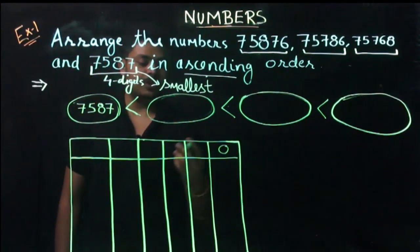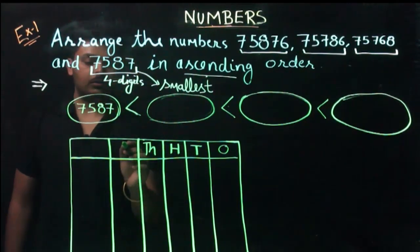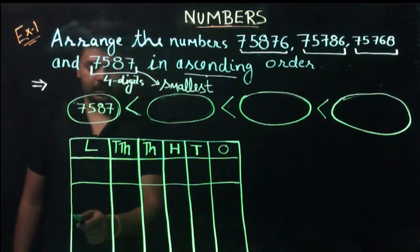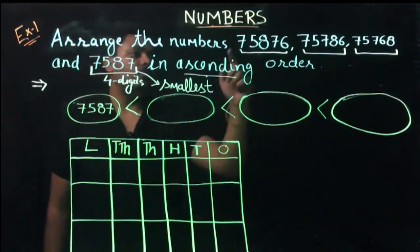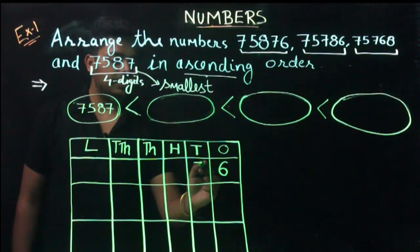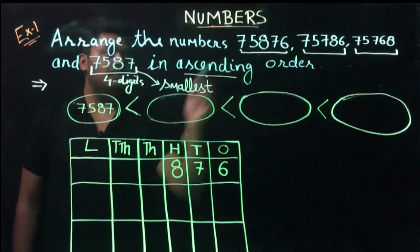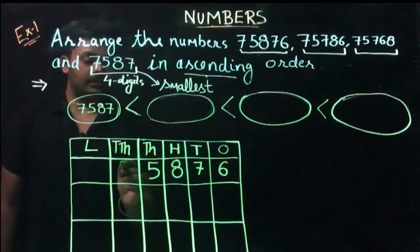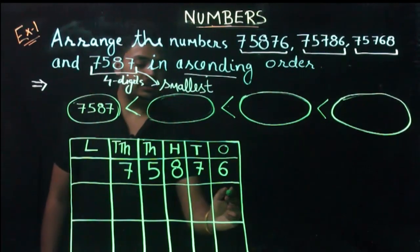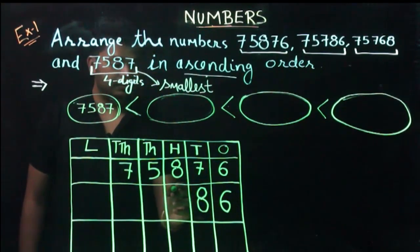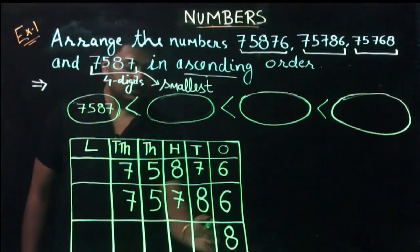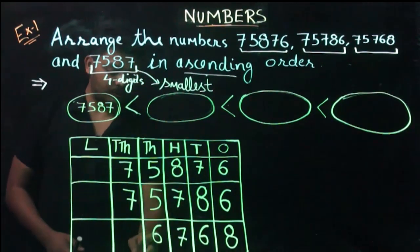Let's draw a place value chart with columns: ones, tens, hundreds, thousands, ten thousands, and lakhs. We place the digits of each number in the chart. For the first number: ones is 6, tens is 7, hundreds is 8, thousands is 5, ten thousands is 7. For the second number: ones is 6, tens is 8, hundreds is 7, thousands is 5, ten thousands is 7. For the third number: ones is 8, tens is 6, hundreds is 5, thousands is 7, ten thousands is 7.